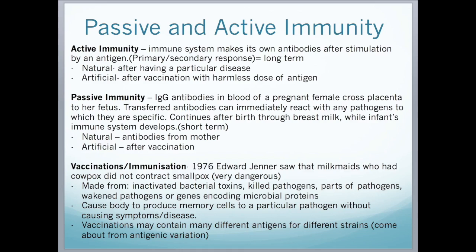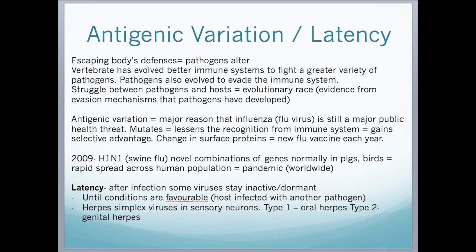Vaccines are made from inactivated bacterial toxins, killed pathogens, parts of pathogens, weakened pathogens, or genes encoding for microbial proteins. After injection, they cause the body to produce memory cells to a particular pathogen without causing symptoms or disease. Vaccinations can also contain many different antigens for different strains, which come about through antigenic variation. Antigenic variation allows pathogens to escape the body's defences by altering their antigens. Vertebrates have evolved better immune systems to fight a greater variety of pathogens, but pathogens have also evolved to evade the immune system — this struggle is referred to as the evolutionary race.